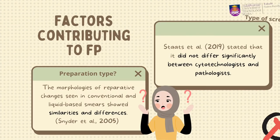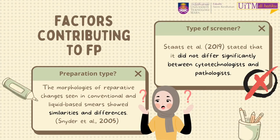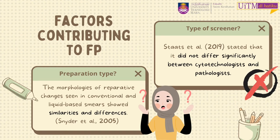What causes false positive results? Is it due to different types of screeners and slide preparation? There are two types of screeners: cytotechnologists and pathologists. Studies claim that even while pathologists had a lower rate of false positives, there was no significant difference between them. Consequently, the type of screener is not what leads to a false positive diagnosis.